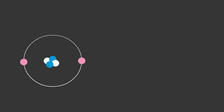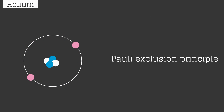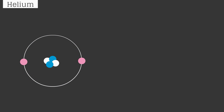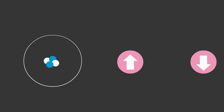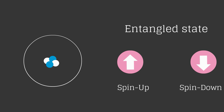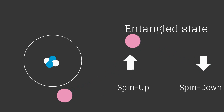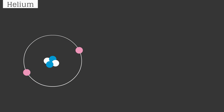Now, there are two electrons in the helium atom. There is one basic rule: the Pauli Exclusion Principle. In this principle, there are two electrons in opposite directions. That's why one electron is upside and another electron is downside. As we discussed in our previous video, there are two electrons in the entangled state. So if you share an orbit, these electrons are in the entangled state.